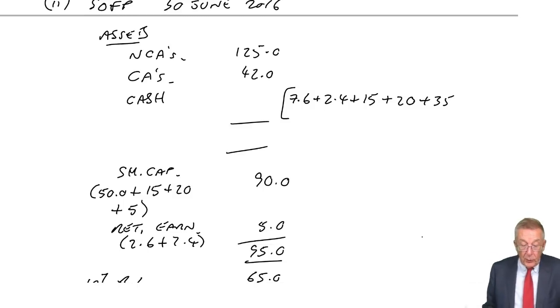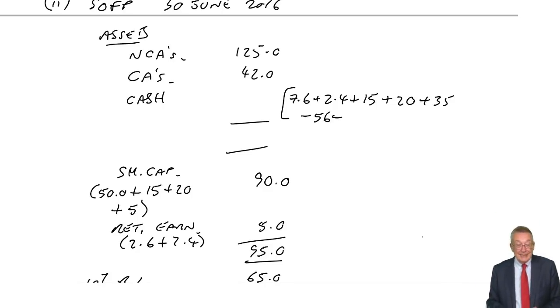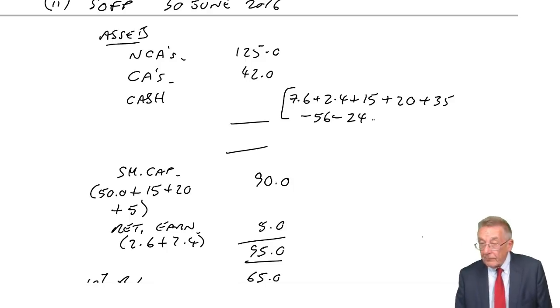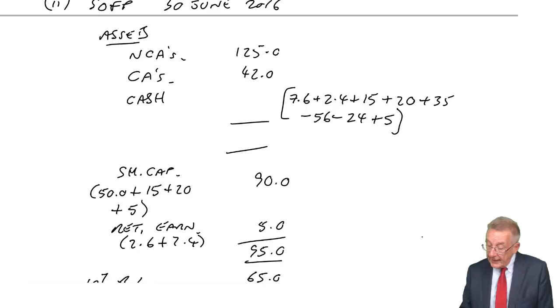Where's all that money gone? Well, non-current assets, first of all. Note 5, they went up to 125 million. 2015, they were only 69 million. So 56 has gone to increase non-current assets. Current assets, they go to 42. They were only 18. So they've gone up by 24. So less cash. Finally, though, current liabilities. They were 7. They've gone up to 12. Well, that gives us 5 more cash.